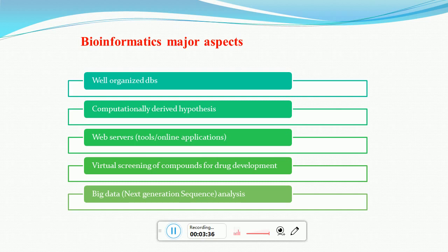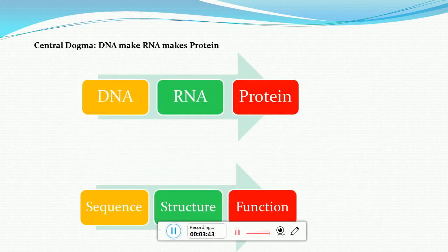Next is big data and next-generation sequence analysis, which is basically whole genome sequencing. Moving further, this is an important part of bioinformatics. As we all know, for life sciences the central dogma consists of DNA, RNA, and protein — basically DNA is converted into RNA, and then RNA is converted into protein.